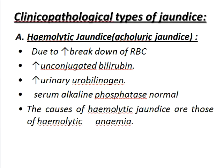Hemolytic jaundice occurs due to: number one, increased breakdown of RBCs; number two, increased unconjugated bilirubin. Serum alkaline phosphatase is normal.